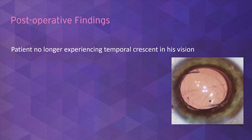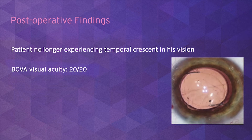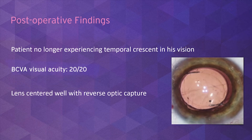On post-operative day one, the patient noted that the shadow he had noticed before surgery had disappeared. As the patient healed, best corrected visual acuity returned to 20/20, and the intraocular lens remained in a position of reverse optic capture, with the haptics staying in the capsular bag and the optic staying in front of the anterior capsular rhexis.